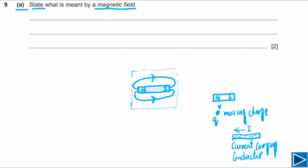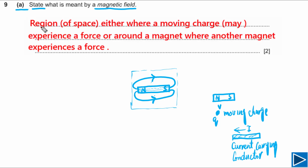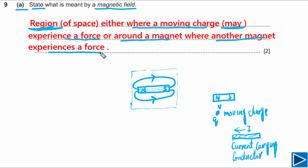Now let me explain how to write your answer. You can say: a region of space where a moving charge may experience a force. We say 'may experience' because if the moving charge is moving parallel to the magnetic field it will not experience a force. Alternatively, you can say: a region around a magnet where another magnet will experience a force.